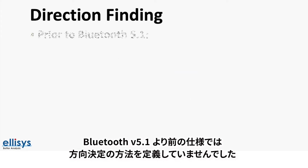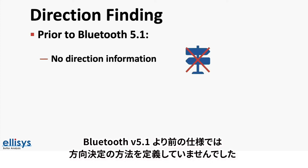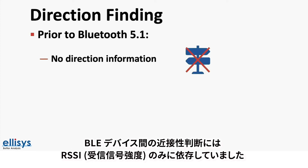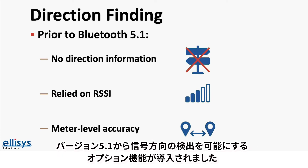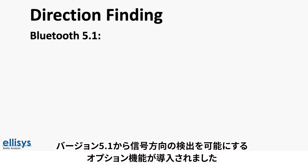Before version 5.1, the specification did not define a way to determine direction information. We also relied solely on RSSI, or Received Signal Strength Information, to determine proximity between two BLE devices. The accuracy was not so great and was usually limited to meter-level accuracy.